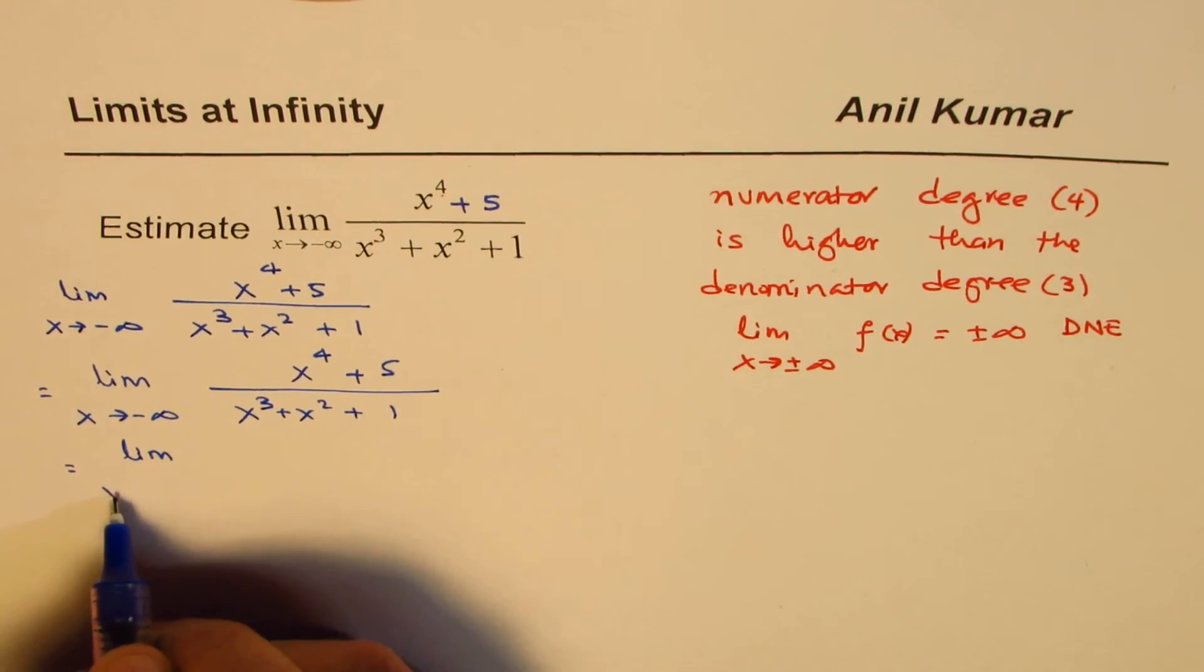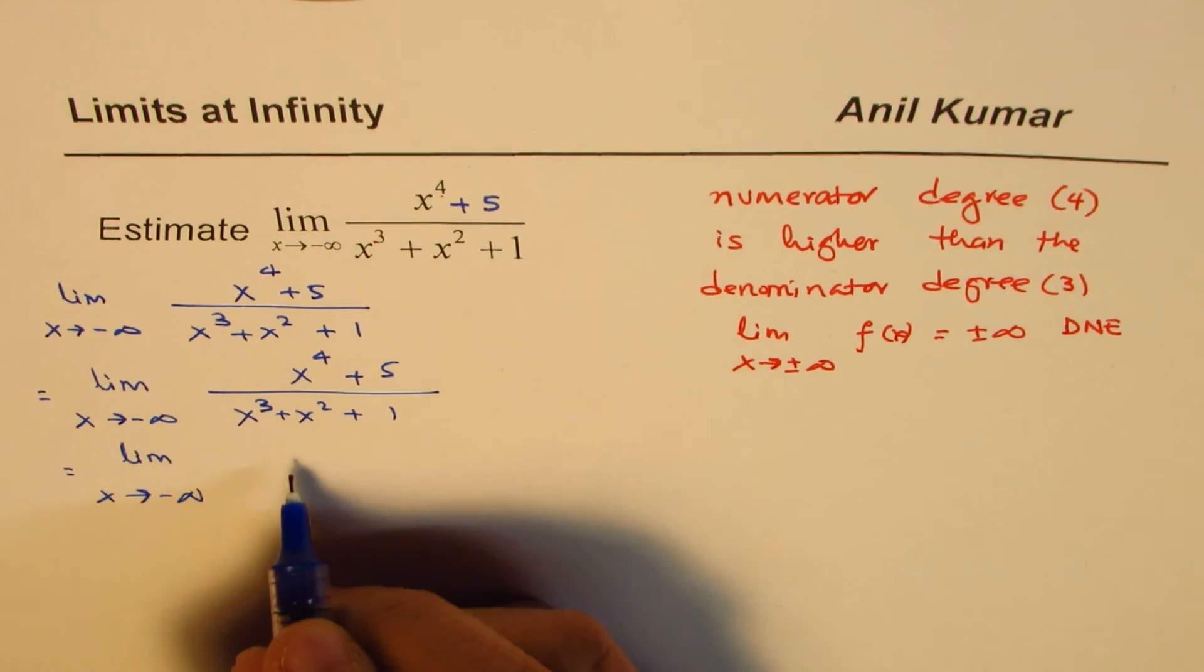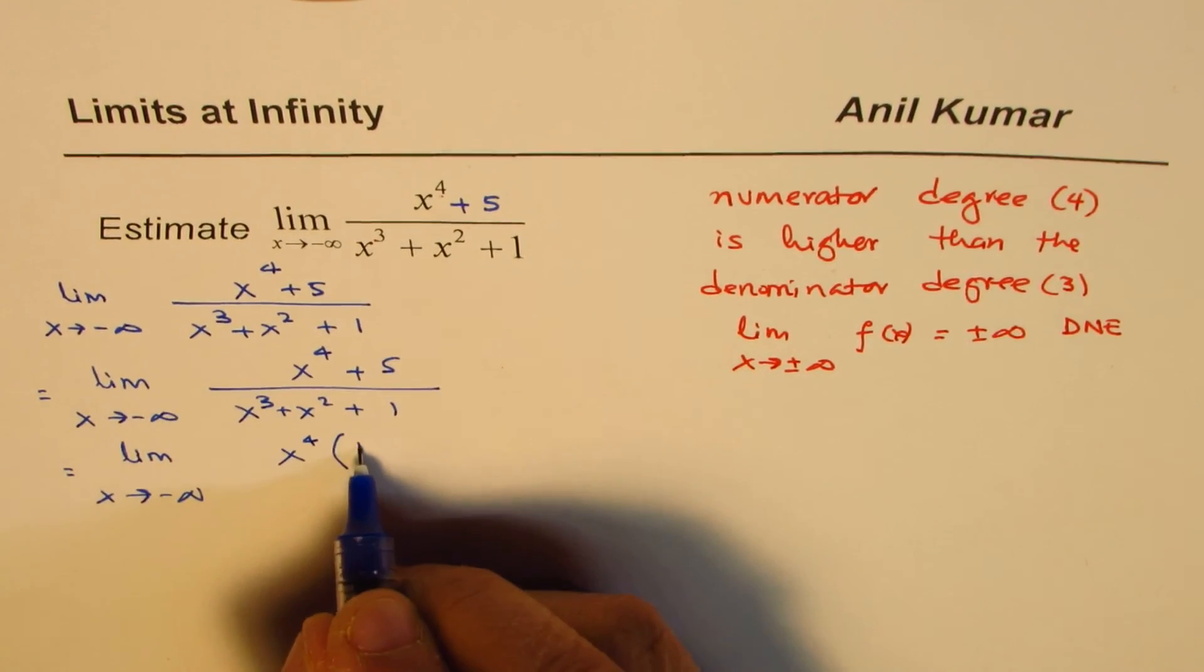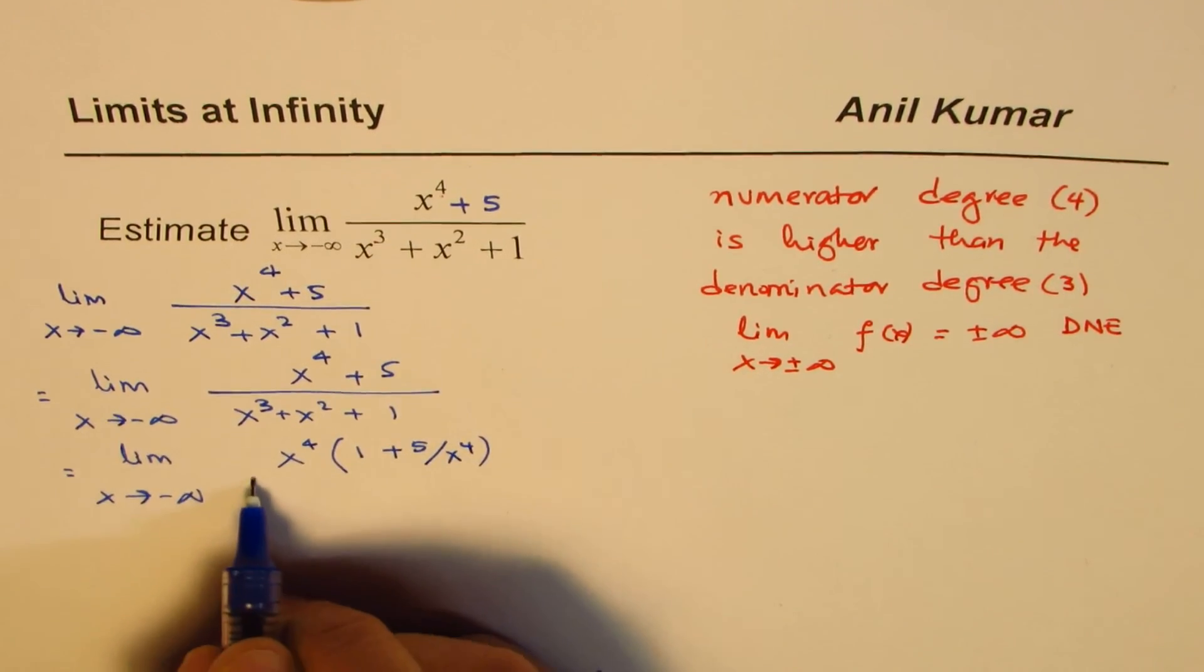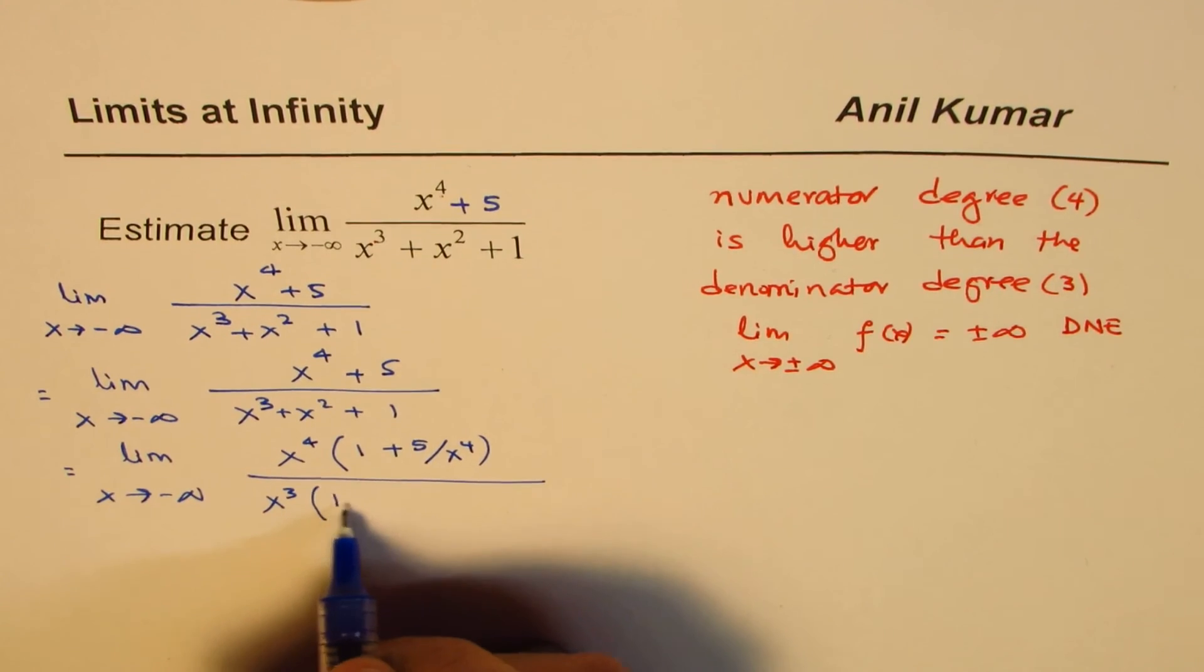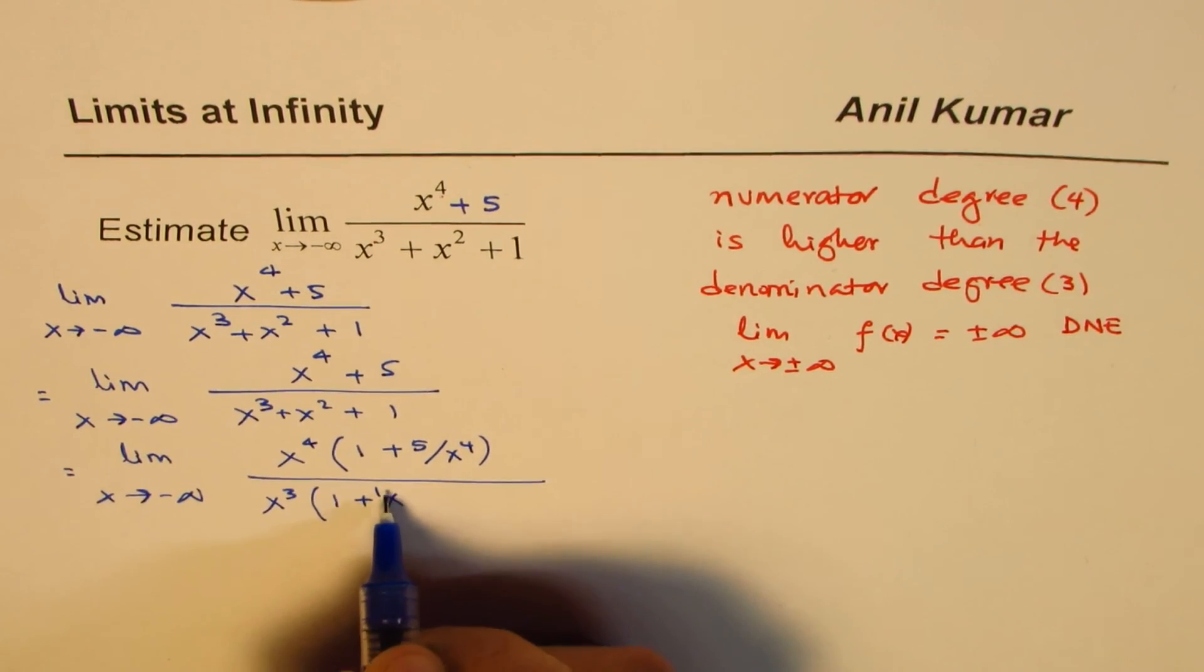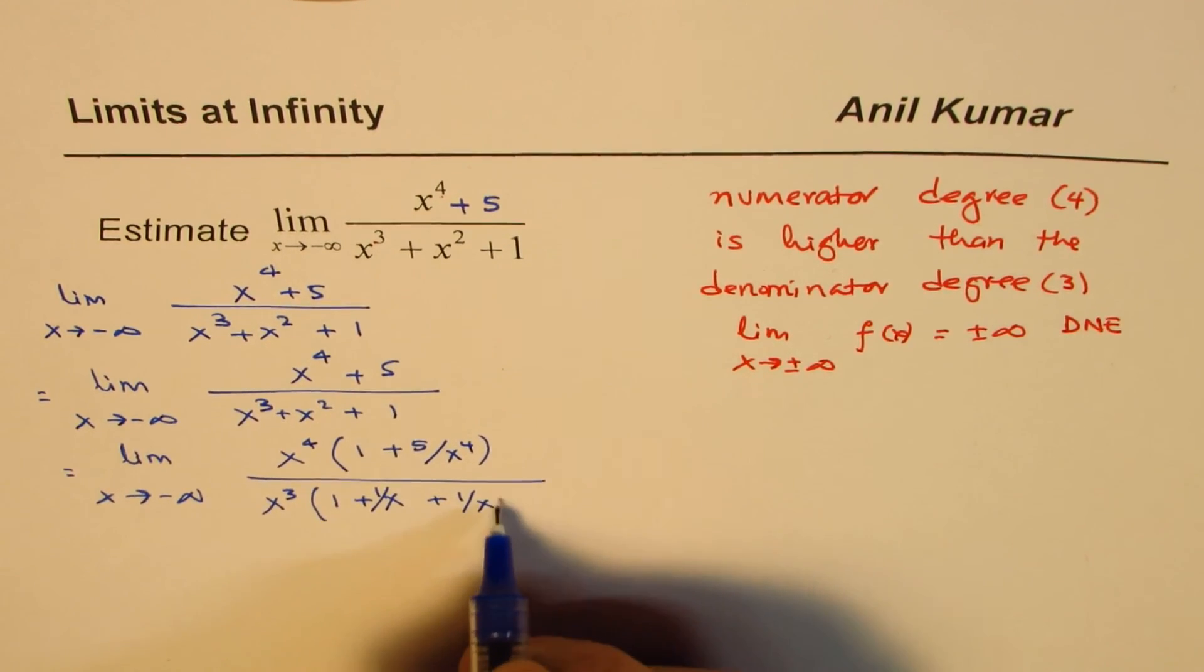Steps involved are like this. Take this common. So we have x4, take it common. So we're left with 1 plus 5 over x to the power of 4, correct? Now in this case, denominator, take x cubed common. So we're left with 1 plus 1 over x, 1 over x. x squared divided by x cubed plus 1 over x cubed. Perfect.